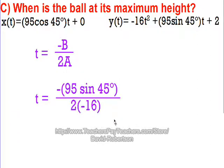Either way, you end up getting this if you're doing it by hand, because remember the b value was 95 sine of 45 degrees, and a is the negative 16. You work that out on your calculator and you get 2.099 seconds.